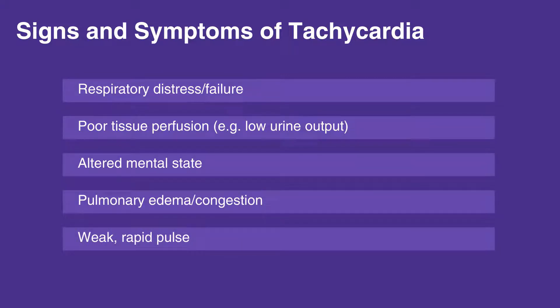There are several kinds of tachycardia, and they can be difficult to differentiate in children on ECG due to the elevated heart rate. The following is a list of the kinds of tachycardia and what happens during the specific tachycardic event.